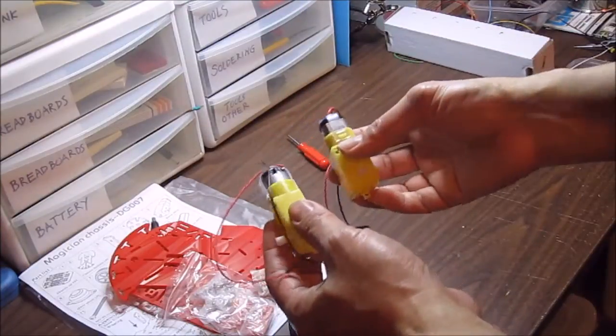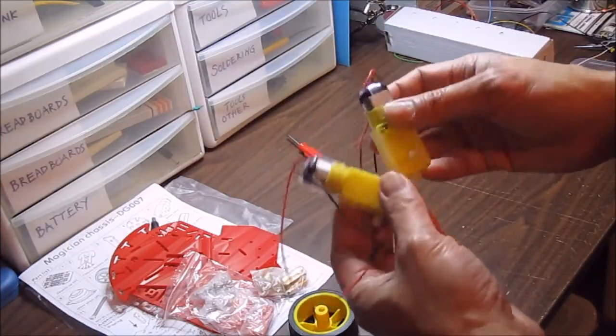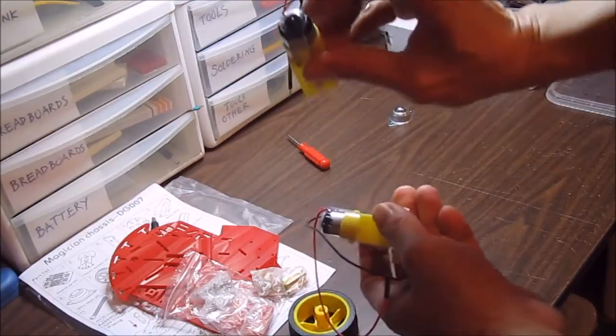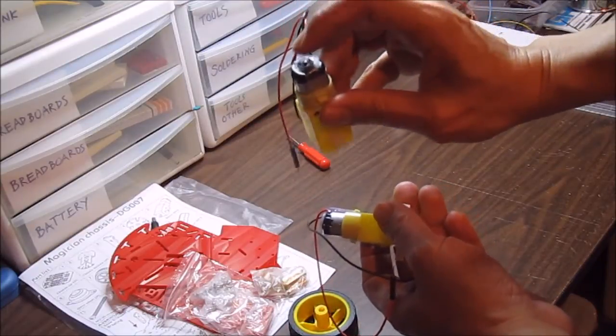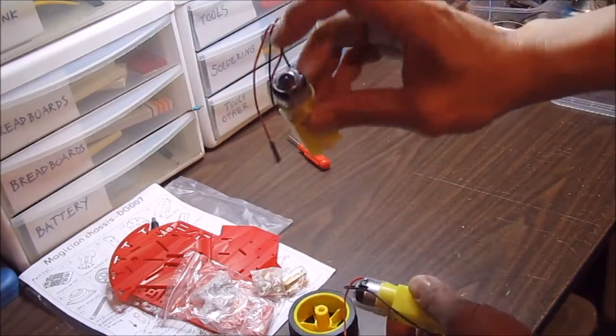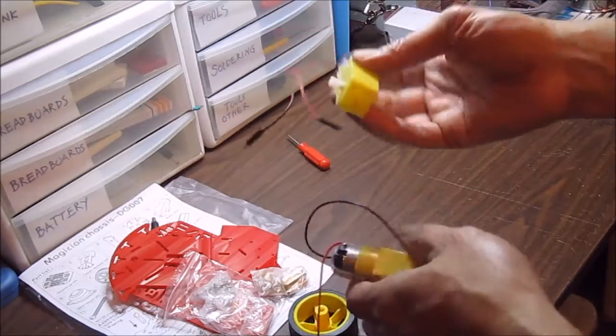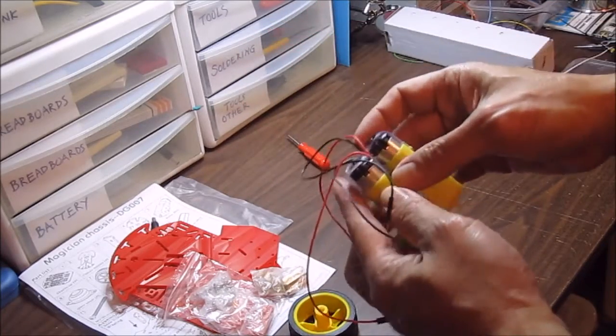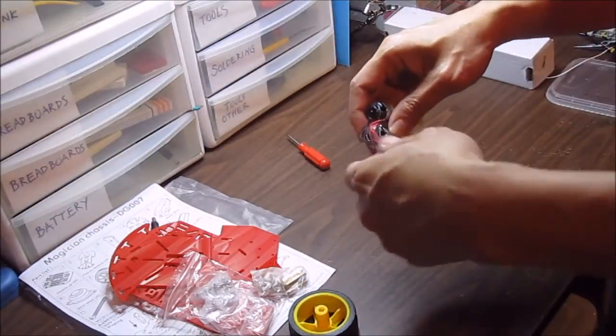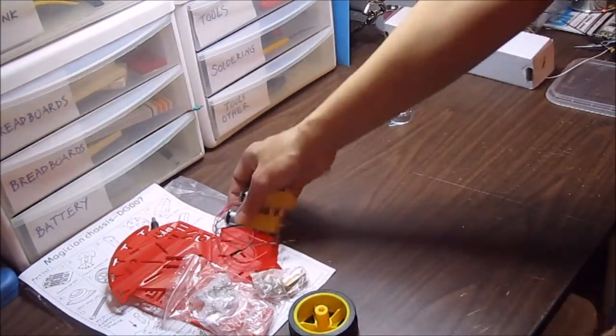These motors are very, very weak. I was able to hold the little axle back here and by just holding that, the actual motor cannot spin when it's powered using four double-A batteries. So that's the weak part.